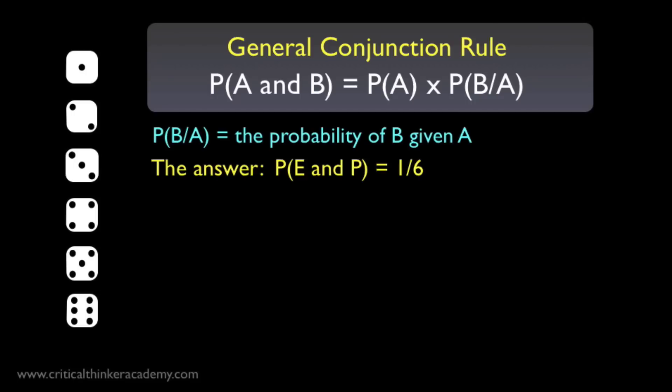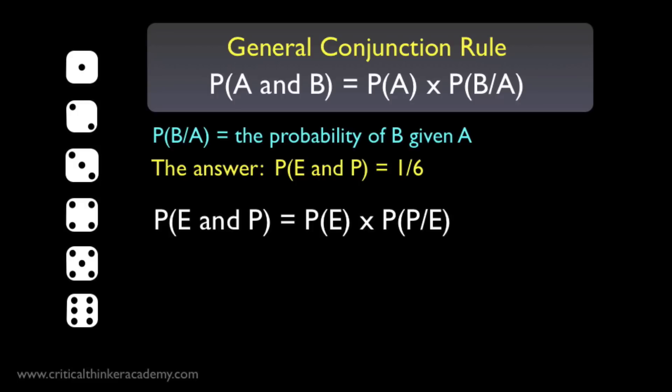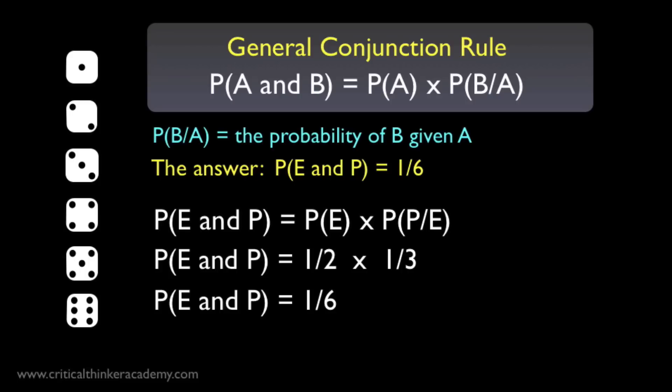First of all, let's remember that we know what the answer is supposed to be just by inspection. There's only one dice roll that is both even and prime, so the probability has to be 1 in 6. Here's our formula: the probability of a dice roll being even and prime equals the probability of it being even times the probability of it being prime given that it's even. The probability that a roll is even is 1 half. The probability that a roll is prime, given that it's even, is 1 third — since among the even numbers 2, 4, and 6, only the 2 is prime. 1 half times 1 third is 1 sixth. And lo and behold, we get the right answer.